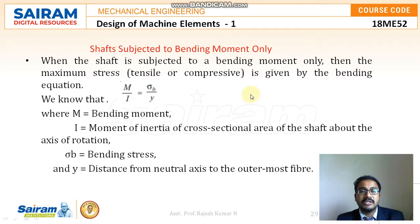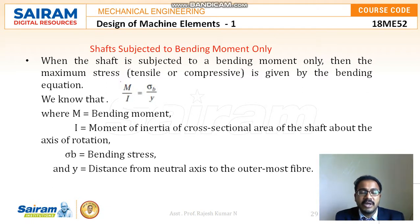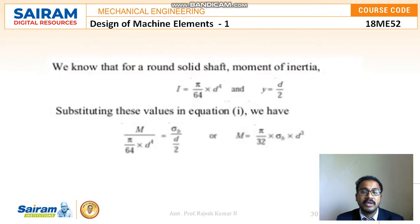Next, we look at the shaft subjected to bending moment alone. When the shaft is subject to a bending moment only, the maximum stress — tensile or compressive — is given by the bending equation: M/I = σB/Y, where M is the bending moment, I is the moment of inertia of the cross-section, σB is the bending stress, and Y is the distance from the neutral axis to the outermost fiber. For a round solid shaft, I = π/64 × D⁴ and Y = D/2.